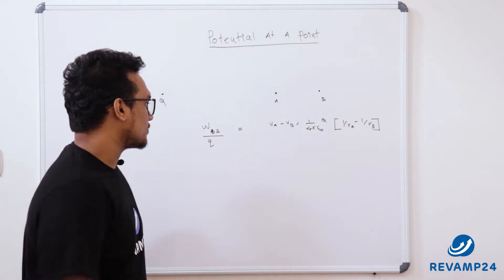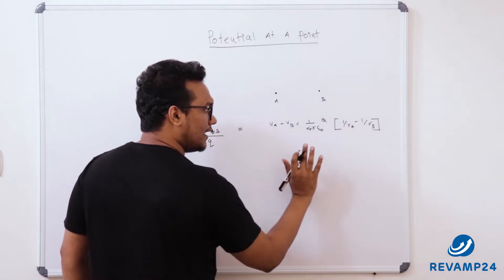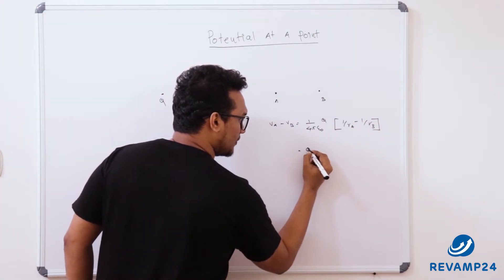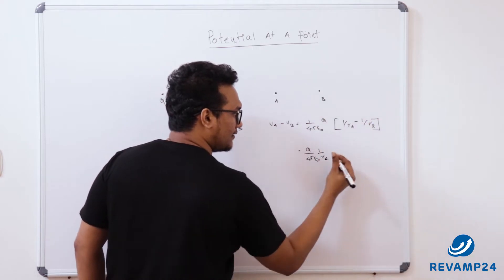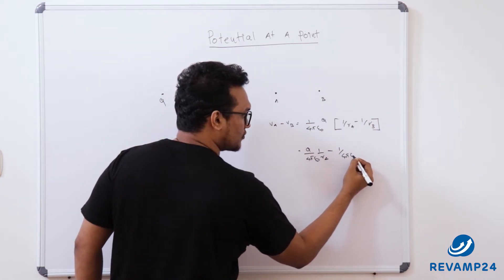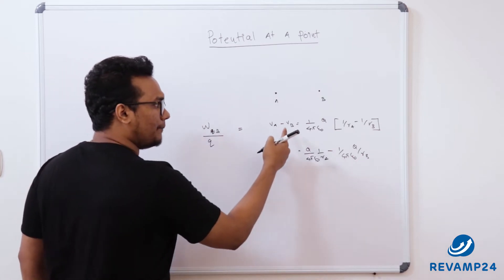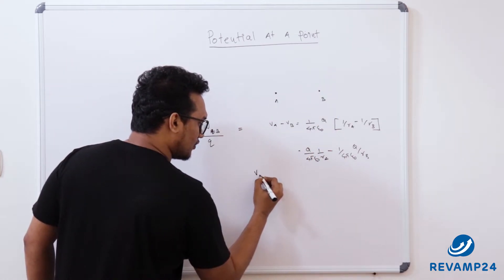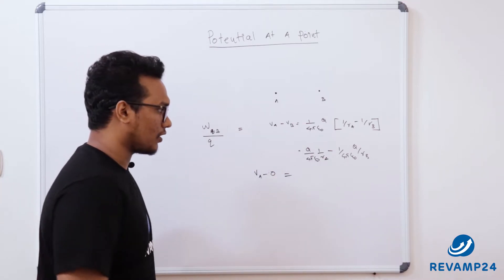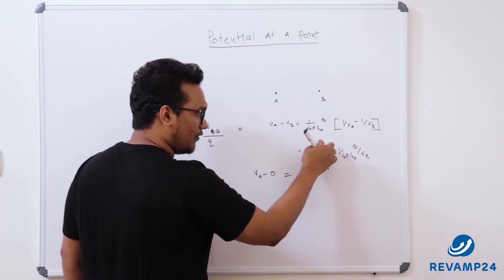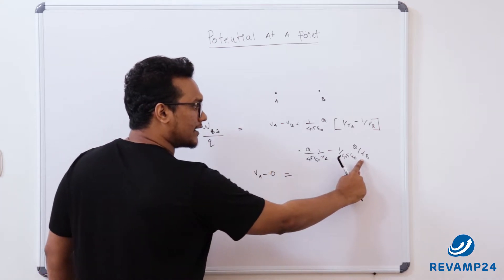How can I make V_b equal to 0? V_b is connected with — let me expand the equation. That will become q over 4πε₀ times 1/r_b. Now when I am making V_b equal to 0, I can easily get the value of V_a. V_a minus V_b becomes 0. To make V_b equal to 0, the only possibility is making r_b equal to infinity.